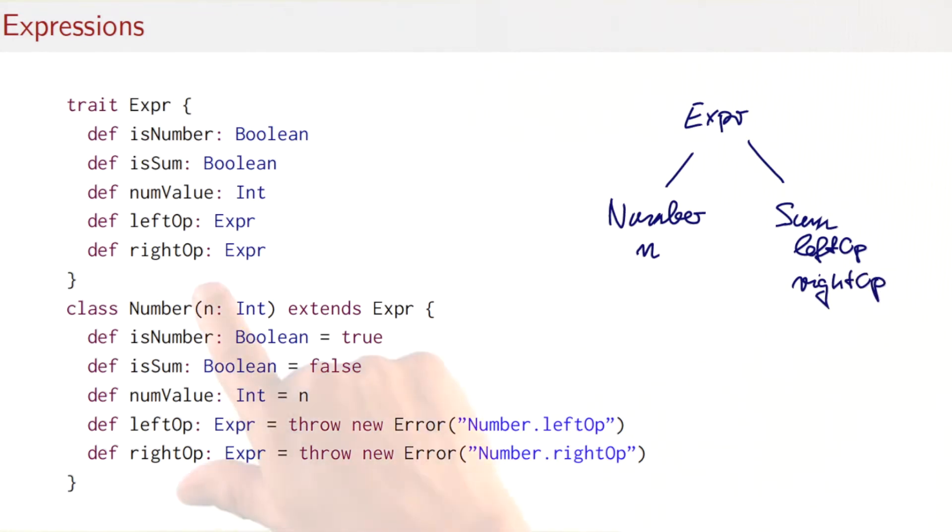So to do that, here's the implementation of Number. Number is a subclass of expression and it would now implement all the five methods that you see here. In expressions we have the two classification methods isNumber and isSum, and we would have the three accessor methods for either numbers or sums which read numValue, which this one applies only to numbers, and leftOp, rightOp, these ones apply to sums. So to implement these five methods, what do we do in Number? Well, isNumber obviously is true. isSum obviously is false.